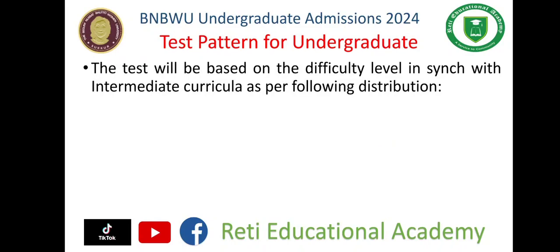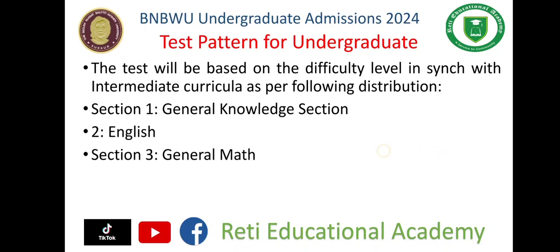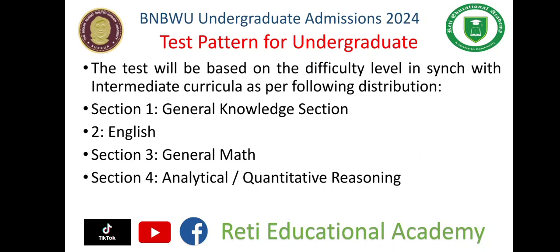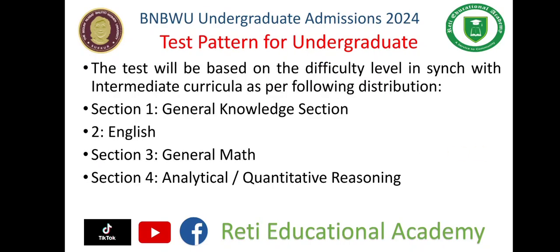The test will be based on the intermediate curriculum difficulty level, with the following distribution: Section 1 — General Knowledge, Section 2 — English, Section 3 — General Mathematics, Section 4 — Analytical or Quantitative Reasoning. These first four sections are compulsory for every student, regardless of the degree program you are applying for.